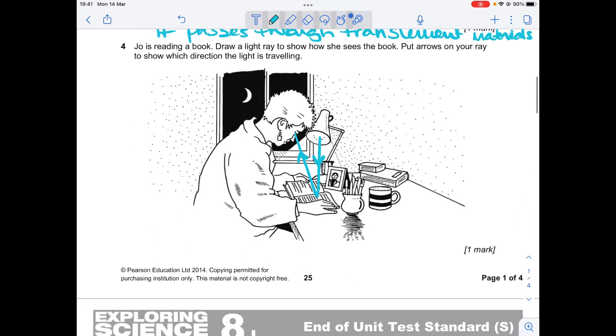Okay, I learned my lesson in the last video about having to put my microphone down, so I have already drawn this. It says Jo is reading a book. Draw a light ray to show how she sees the book. Put arrows on your ray to show which direction the light is traveling.